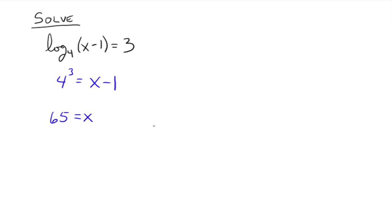Now there's one other thing about logarithmic equations we have to be careful about: 65 is definitely a solution to the exponential equation, but it may or may not be a solution to your original logarithmic equation, because you've got the argument to worry about. Remember, the argument cannot be zero or a negative number. If you take 65 and plug it in for x, you get a positive 64 inside the argument — that's fine. So 65 is a valid solution. But if you got a negative number inside the argument, you could not use that answer.